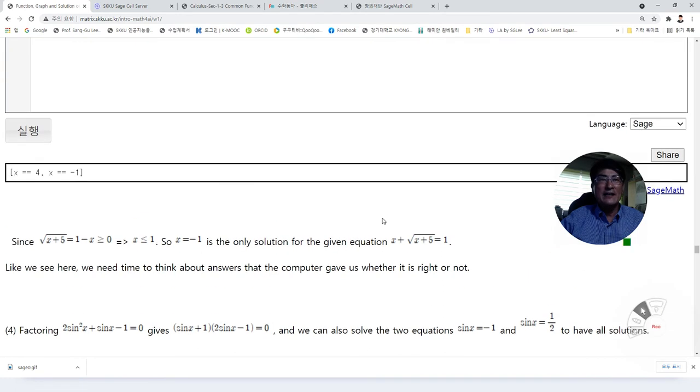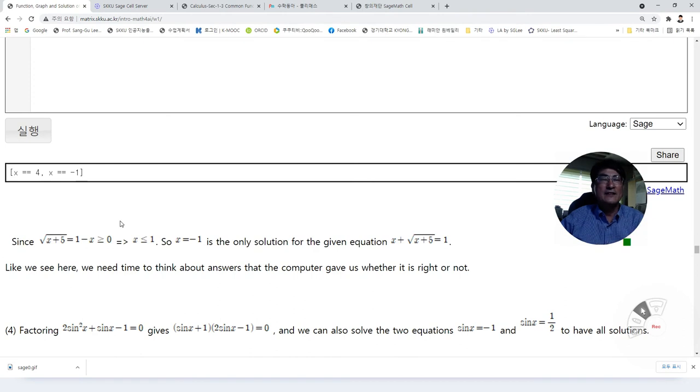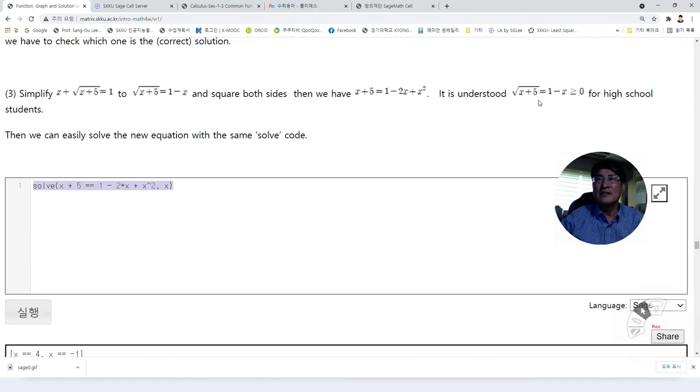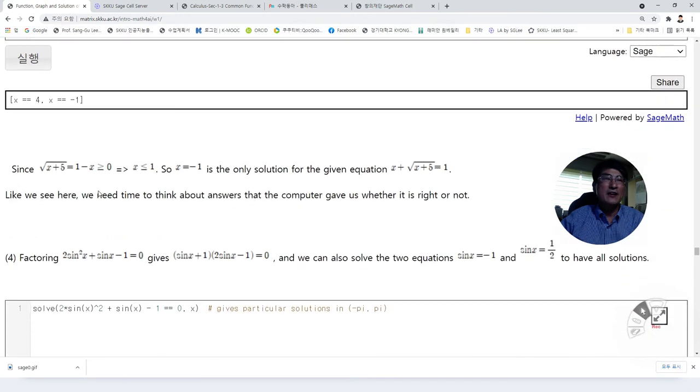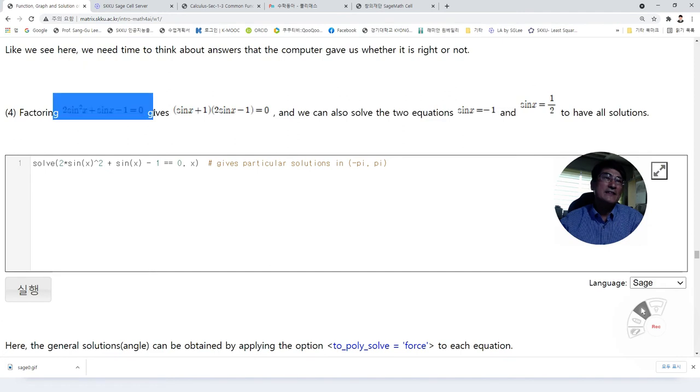So we know x is equal to minus one is the only solution for the given equation like this. So if we can simplify, then we can use the same command to have several answers. But with the given condition, then we can exclude the unnecessary false solutions to have the right solutions only. And next, for this case, we can factor this. Then solutions satisfies this or this. So we know sin x is equal to minus one gives us the solutions. And sin x is equal to one half to give the solutions.